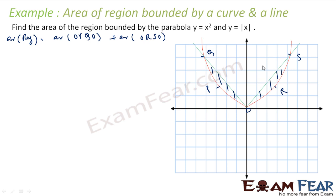The area required is area of OPQO plus area of ORSO. By symmetry both are equal, so I can find one area and double it. Now the question is how to find that area — generally we integrate with respect to X or with respect to Y. If I integrate with respect to Y from here to here, I get the complete area, then subtract to get the required area. Alternatively, integrating with respect to X, I introduce point T and find area of OST, then subtract area of ORST to get the required area.